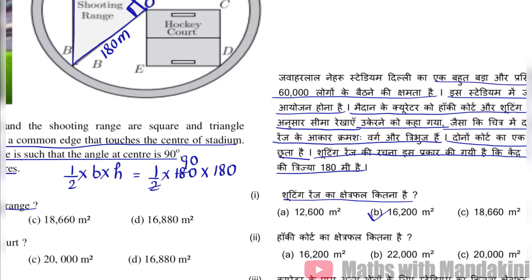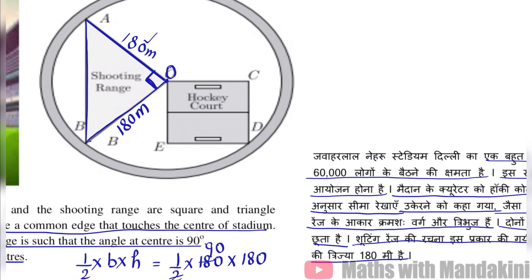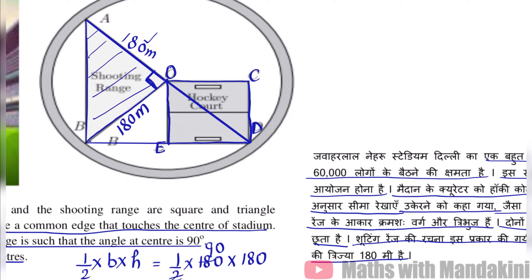Next question kya hai? Hockey court ka shetrifal kitna hai? Yani ab hume area nikalna hai humare hockey court ka. Yeh jo humara vurgh yani square diya gaya hai iska — agar ham is O ko D se mila dein aur is B aur E ko mila dein, toh hume triangle AOB milta hai. Yeh jo humara shooting range jaisa triangle hai, yahi humara triangle OBD ka bhi shetrifal hoga. Yani vohi same area.